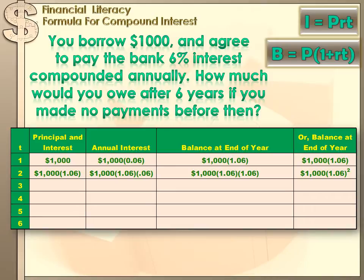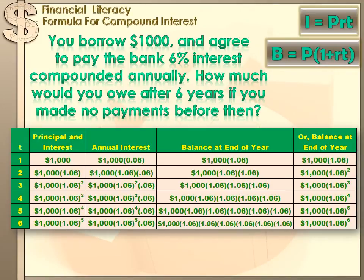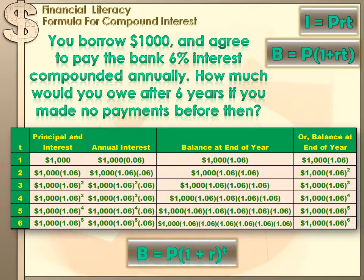Notice something: at the end of the second year, our balance was $1,000 times 1.06 — that's 1 plus our interest rate — squared. At the end of each year, our balance is going to be $1,000 times 1.06 raised to a number equivalent to the time. That is the formula for calculating your balance in a compound interest situation: Balance equals Principal times (1 + Rate) to the t power, where t is the amount of time.